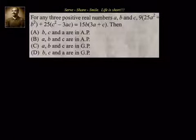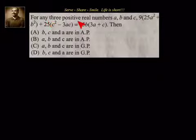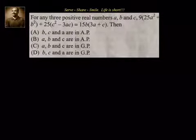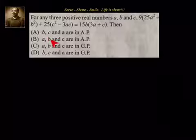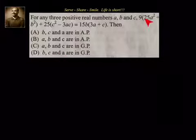Hello friends, welcome back! For any three positive real numbers a, b, and c: 9 into 25a² plus b² plus 25 into c² minus 3ac equals 15b into 3a plus c. Then b, c, a are in AP; a, b, c are in AP; a, b, c are in GP; or b, c, a are in GP.